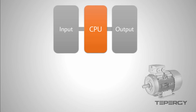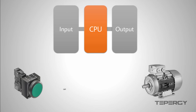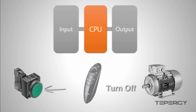Suppose that we have an electrical motor and a push button. We want the motor to turn on when the button is pressed. When the button is pressed again, we want the motor to turn off. This function is similar to the function of the power button on your TV remote.